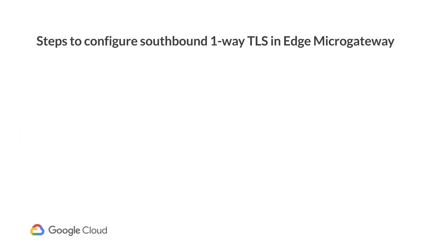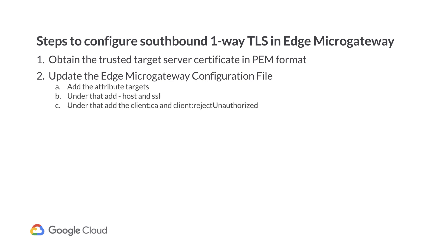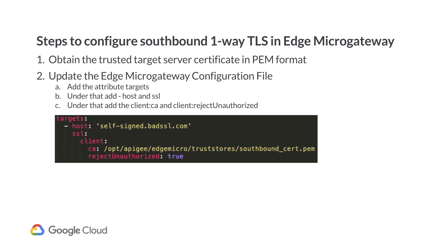Now let's review the steps involved in setting up southbound one-way TLS on Edge Micro Gateway. First, we need to obtain a CA-signed certificate for the target server. The second step is to update the Edge Micro YAML configuration file for the desired organization and environment. Ensure that the target server certificate chain is available in PEM format on the file system, so that we can reference them from the Edge Micro Gateway config. Finally, we will reload the Edge Micro Gateway to pick up the new configuration changes so that it starts using southbound one-way TLS connections.